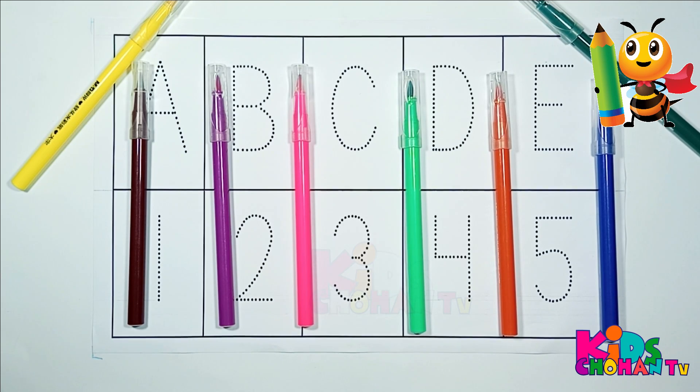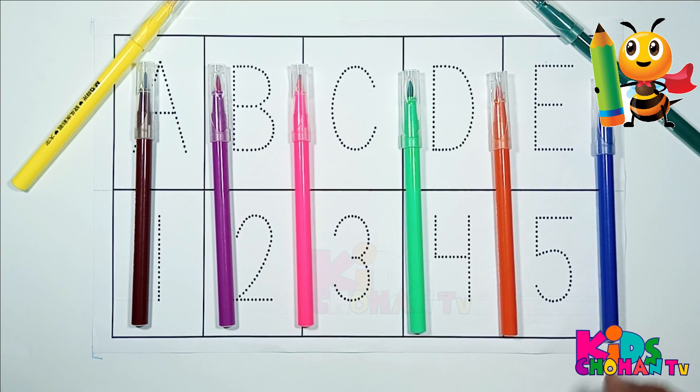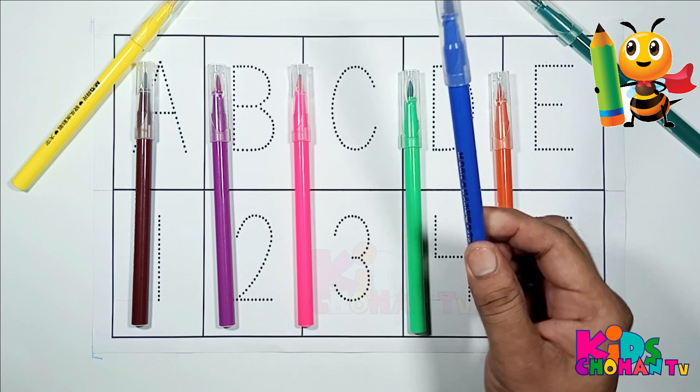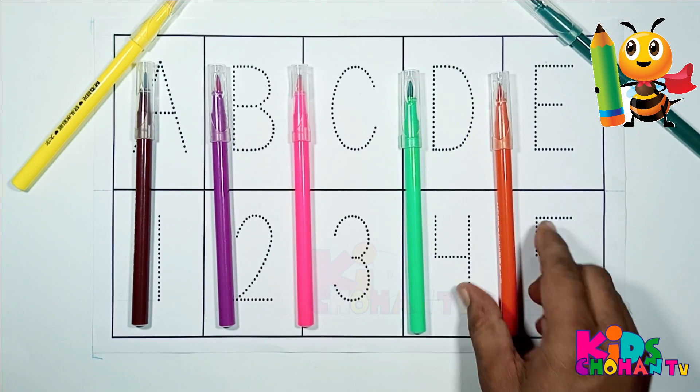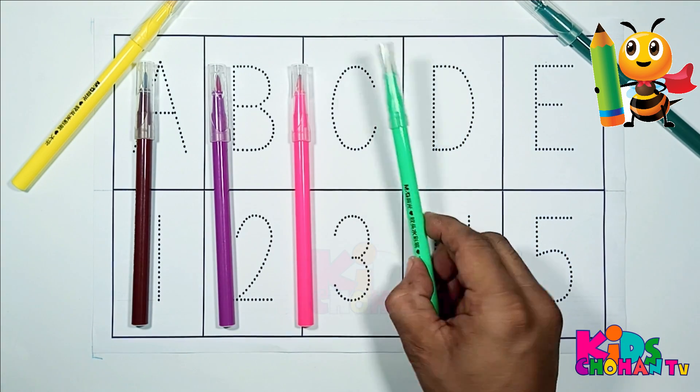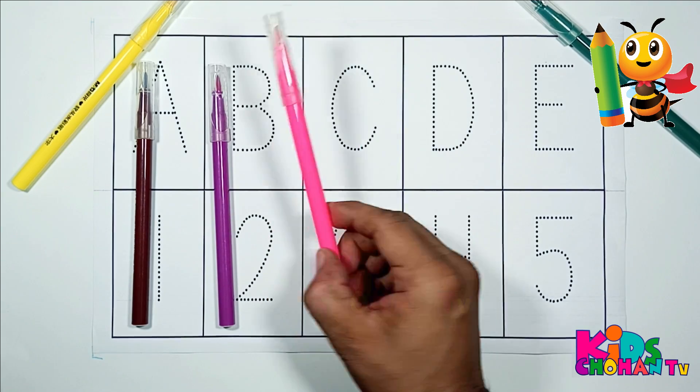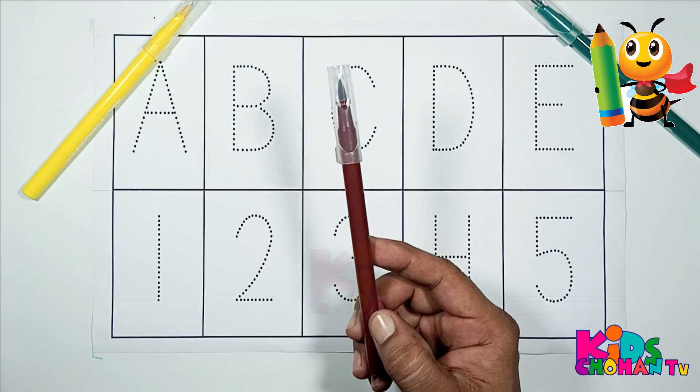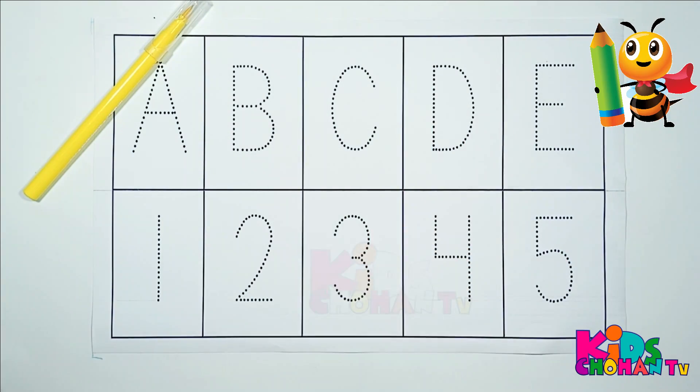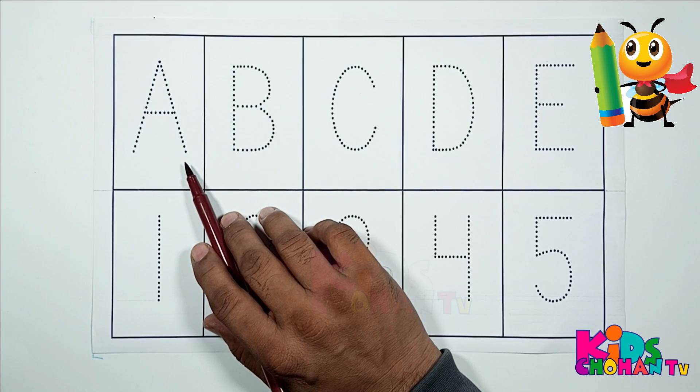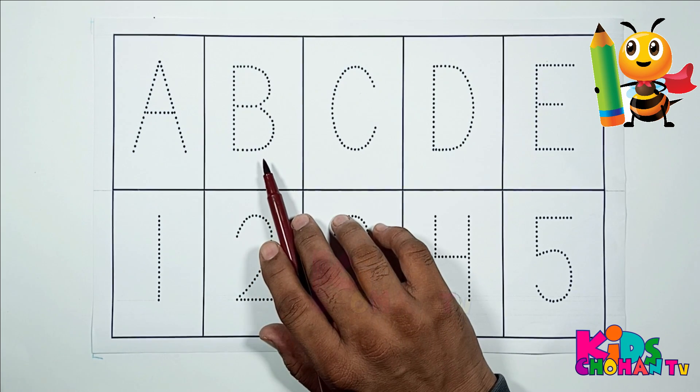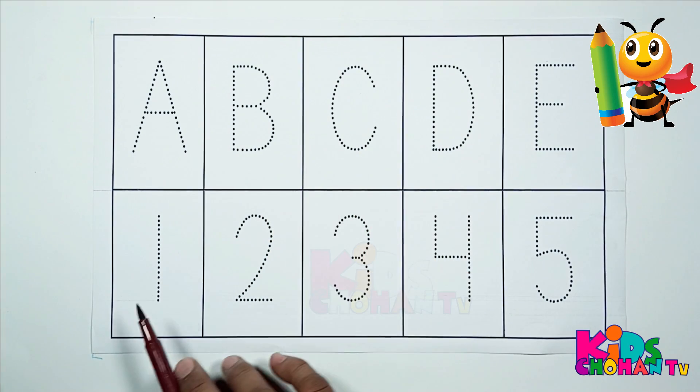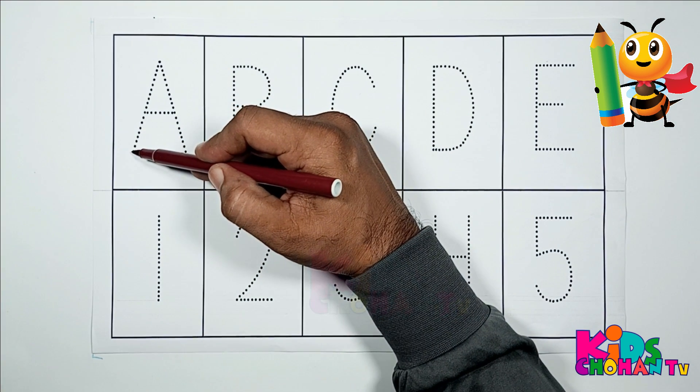Hi kids, welcome back! Let's learn colors. This is blue color, and this is orange color, light green color, pink color, purple color, brown color, green color, and yellow color. In this video we will trace A, B, C and numbers one, two, three. Let's trace.